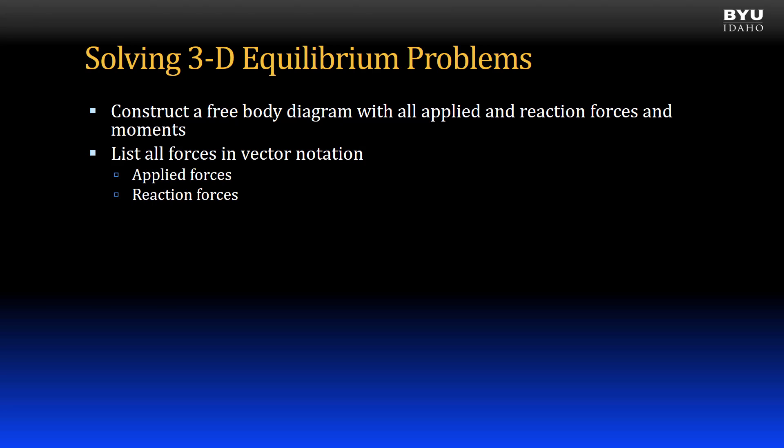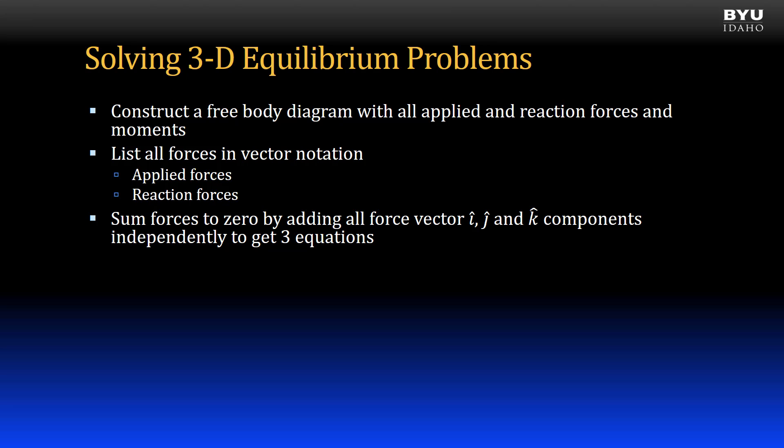Next, we will list all the applied forces and all the reaction forces in vector notation. After we have listed all of our forces, we will sum forces to zero by adding all force vector i, j, and k components independently, setting each of them to zero to get three equations.